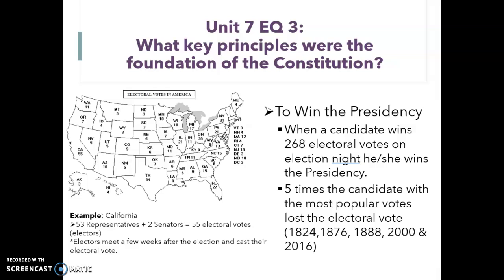To win the presidency, a candidate has to win 268 electoral votes — that's one more than half, that's the majority. There have been five times in our nation's history when the candidate with the most popular votes lost the election due to the number of electoral votes. That happened in 1824, 1876, 1888, 2000, and 2016.